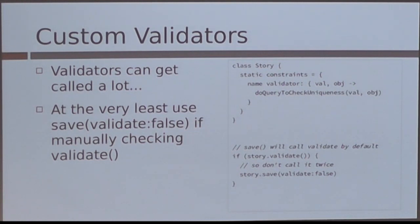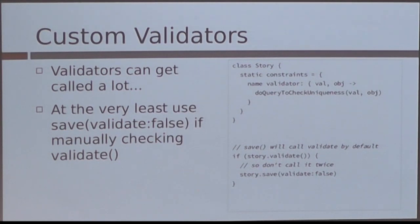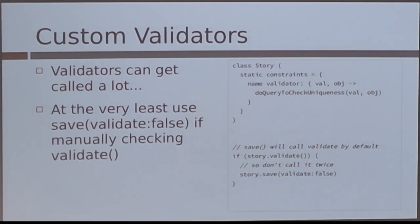Around validate and save false — there seems to be fair amount of debate, at least early on in the Grails community, around the best way to do your saves. If you've already validated first, when you call save it's going to automatically call validate as well. So if you call story.validate() and then story.save(), you're just calling validation twice. Depending on what your validations are, this may not be a huge concern, but it's something to be aware of.